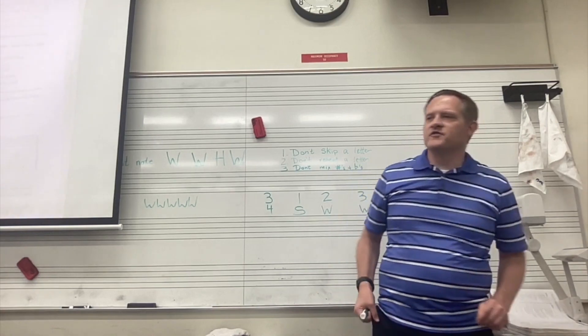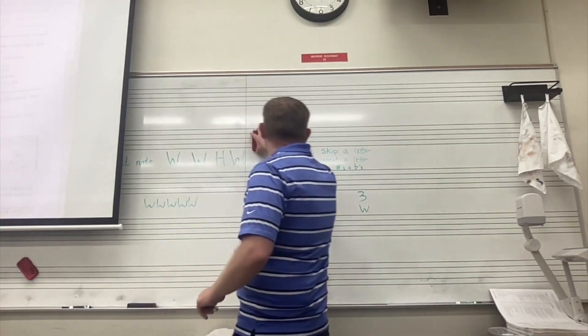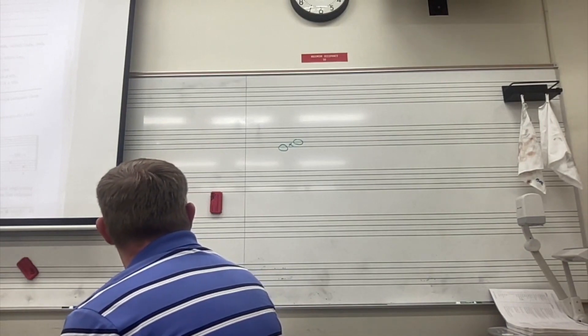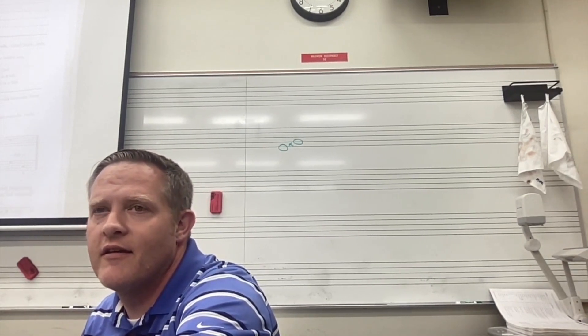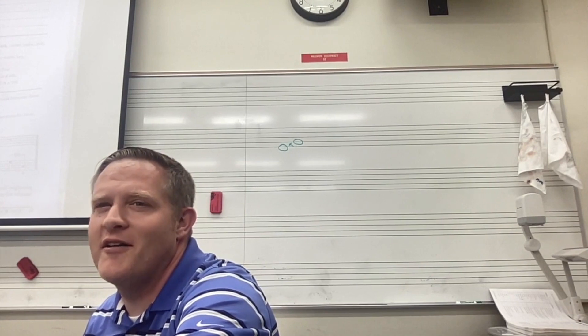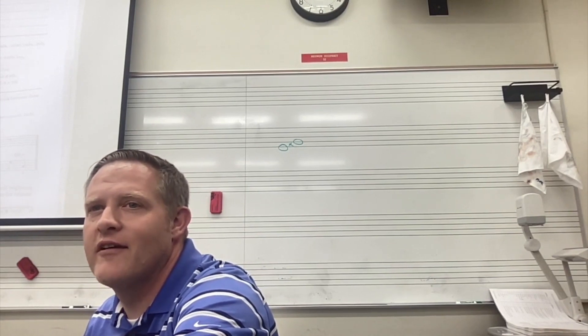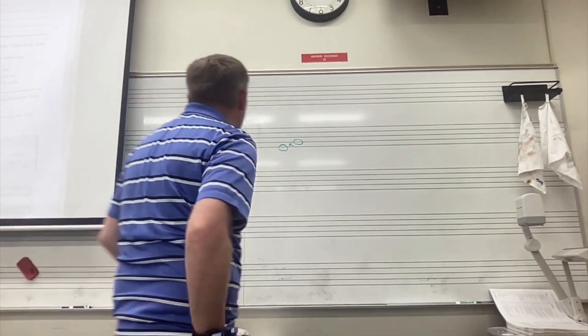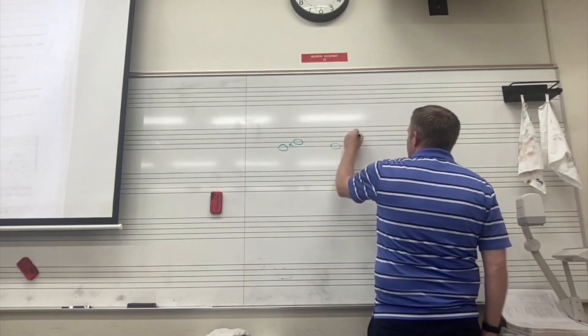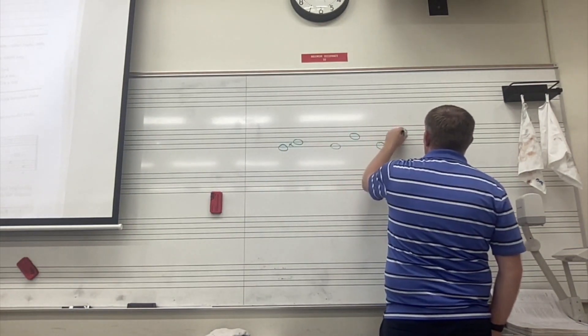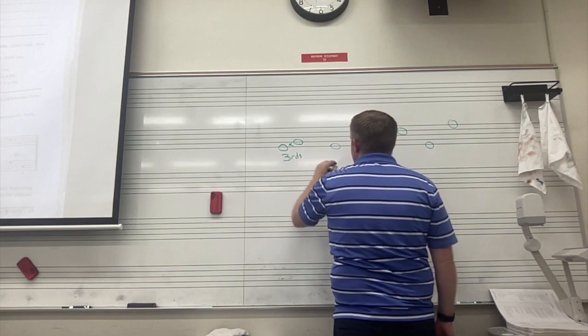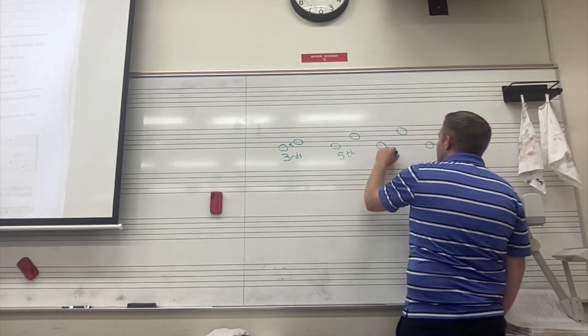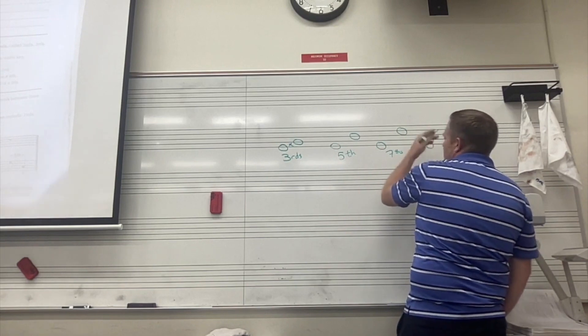Alright, intervals. Intervals are the distance between two notes. A line to a line is a skip, and if it's odd it matches. If it's odd, a line to a line is a third. Threes, fifths, thirds, fifths, sevenths, and ninths are all going to be lines, so they're all going to match. If it's odd, then thirds match, fifths match, sevens match. We won't do the ninth.